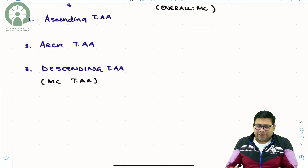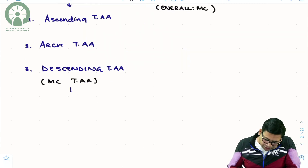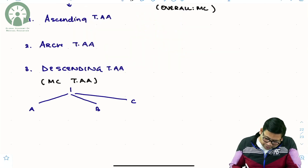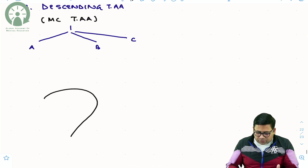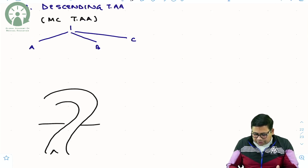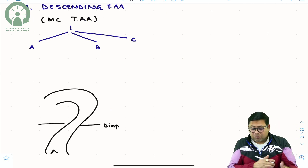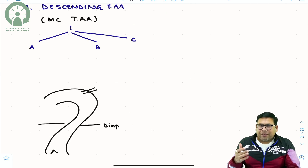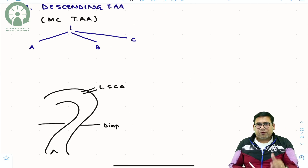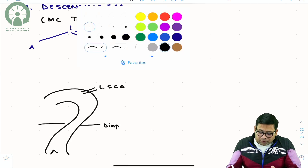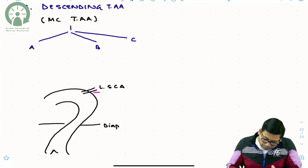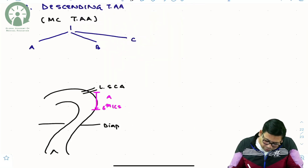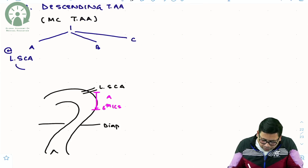The descending thoracic Aorta is further of three types: Type A, Type B, and Type C. The descending thoracic Aorta begins after the origin of the left subclavian artery. Type A is from the left subclavian artery up to the level of the 6th intercostal space. This is very, very important to understand.